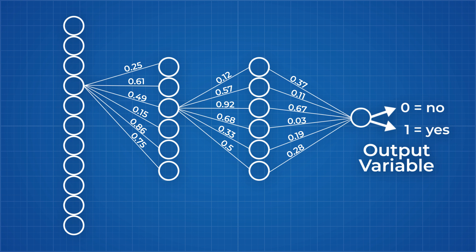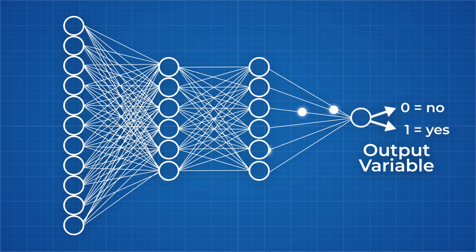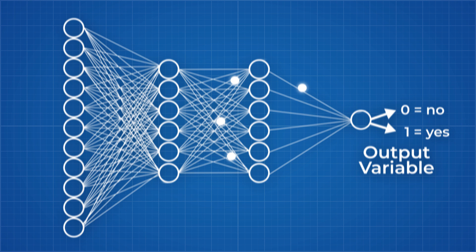Bias and an activation function are also added to the input data as it moves through the network. In an example like ours, an activation function, like a sigmoid function, would squash any output results to lie between a 0 and 1.